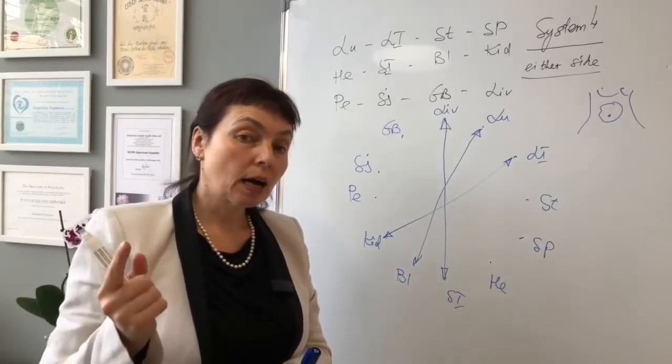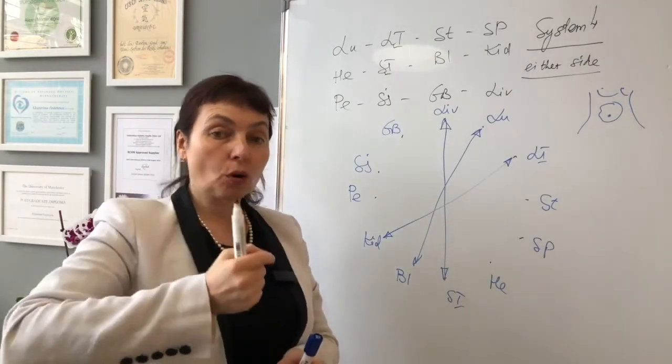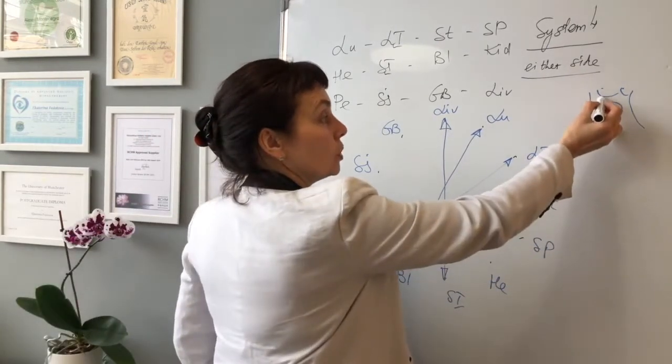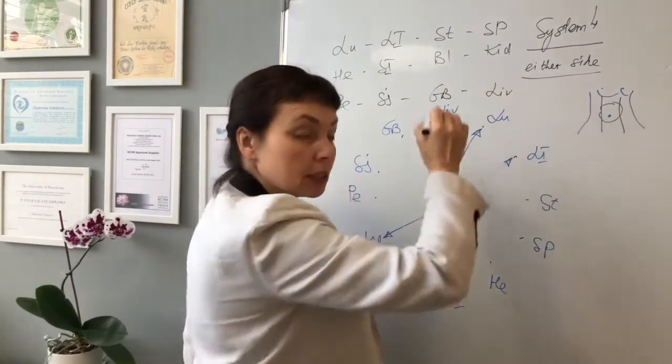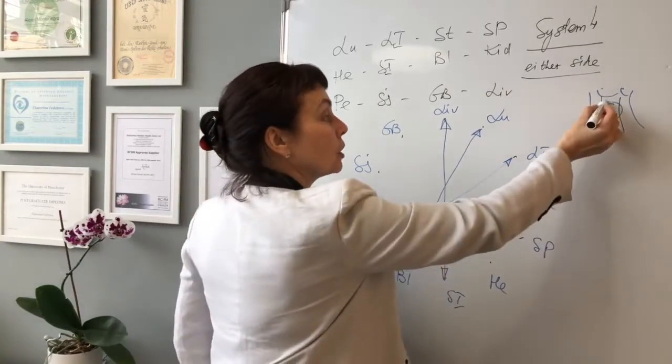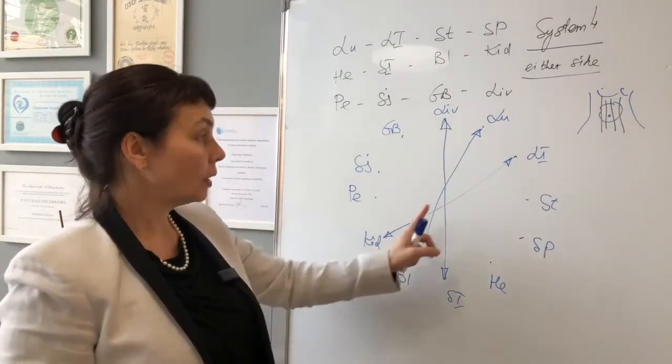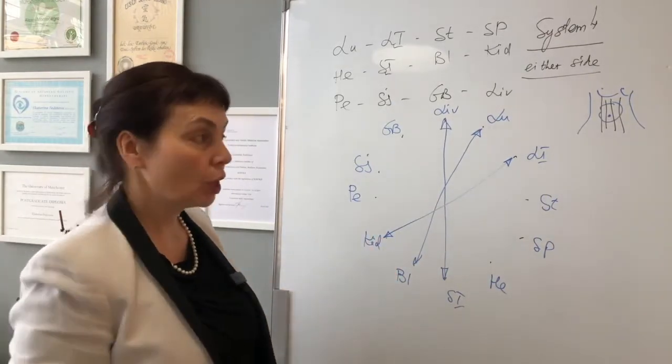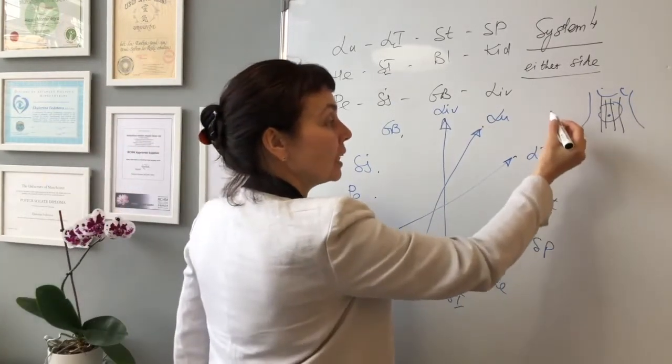We ask which meridian goes through the painful place. We know there are two stomach meridians and two kidney meridians. If we say large intestine will balance both kidney branches, just needling large intestine on either side, left or right, will balance two branches of kidney meridian. Isn't it beautiful?